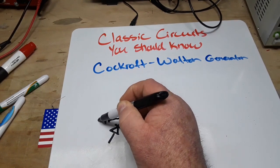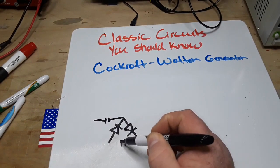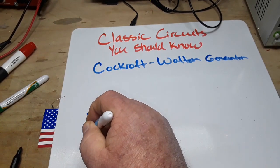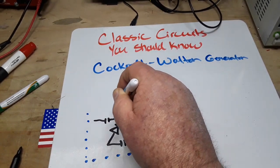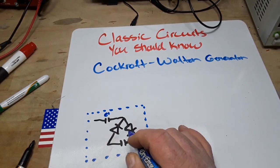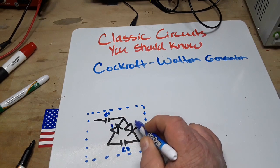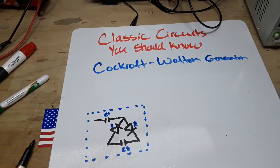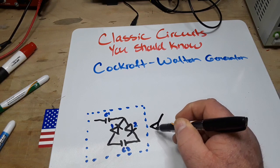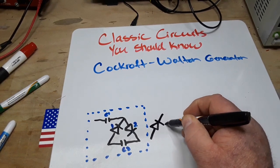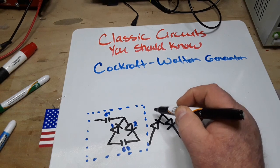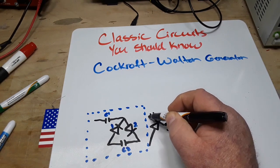So this is one stage of the generator. And we will call this C1, this is C2, this is D1, and this is D2. Now we simply do this again for our next stage. And in fact you will do this as many times as you want for as many stages as you have.